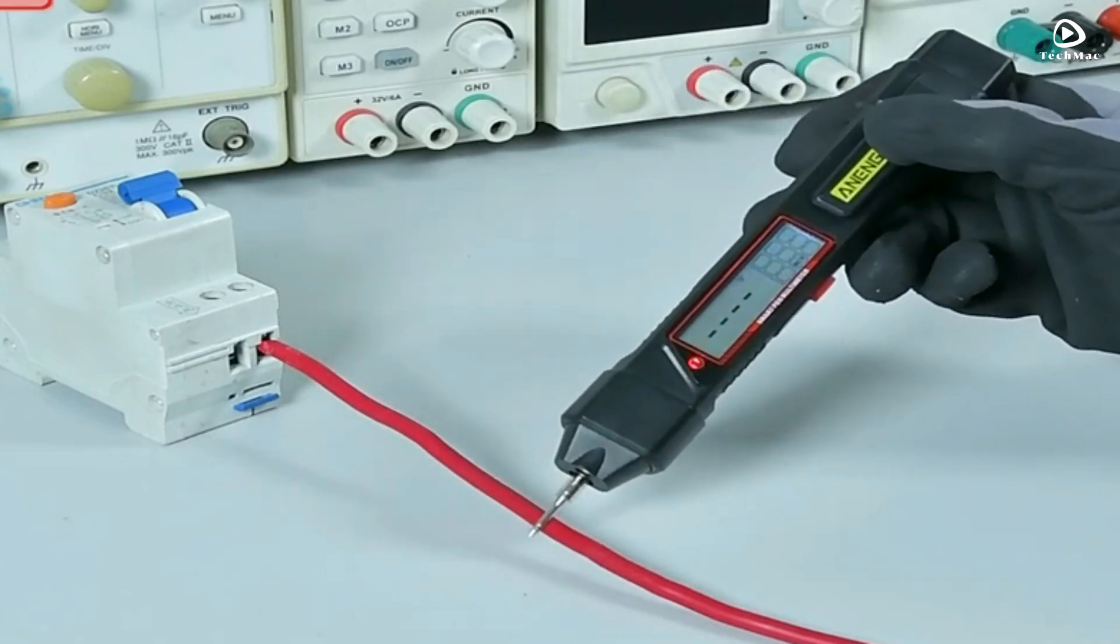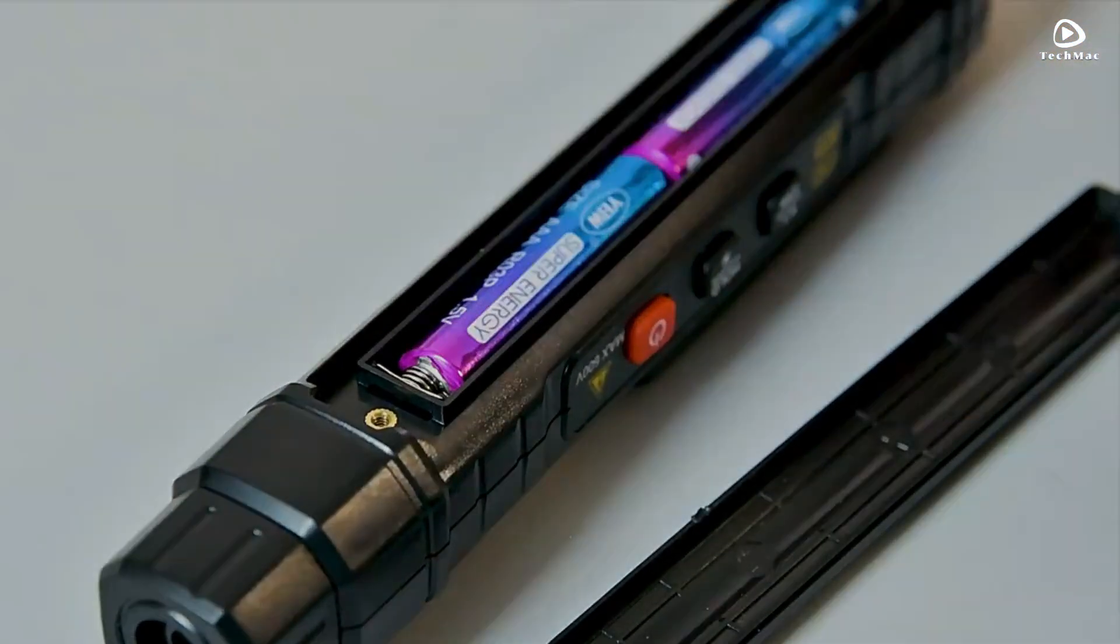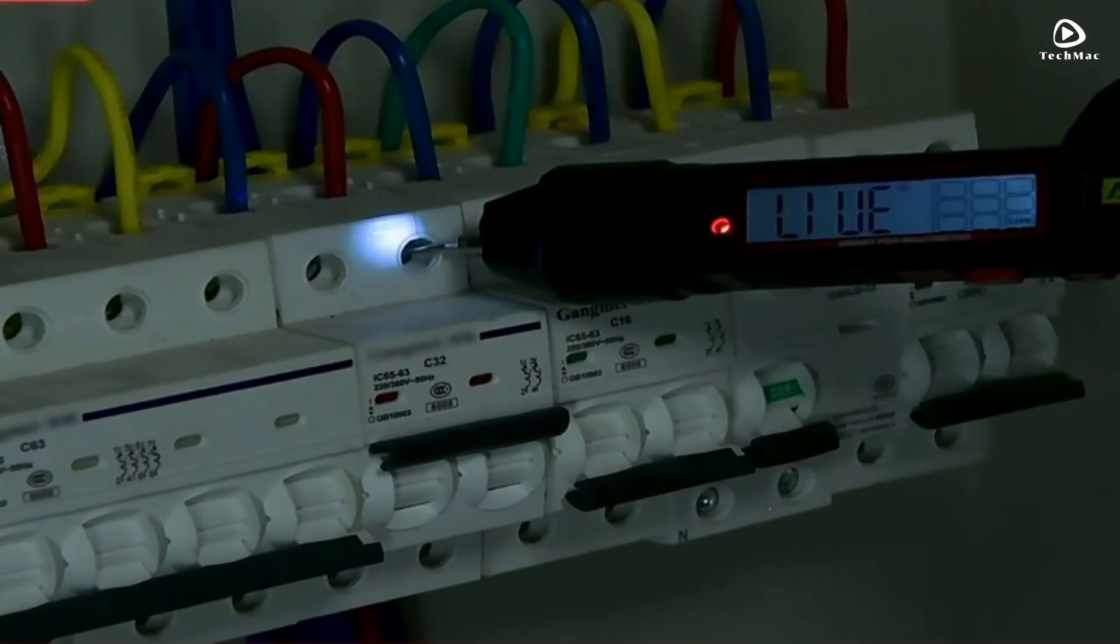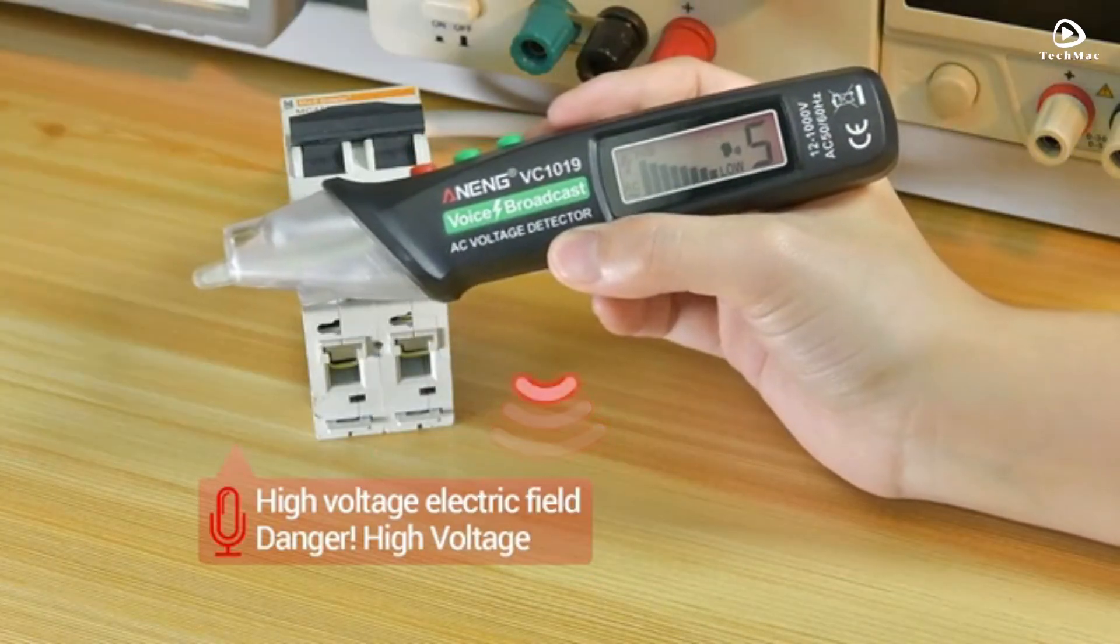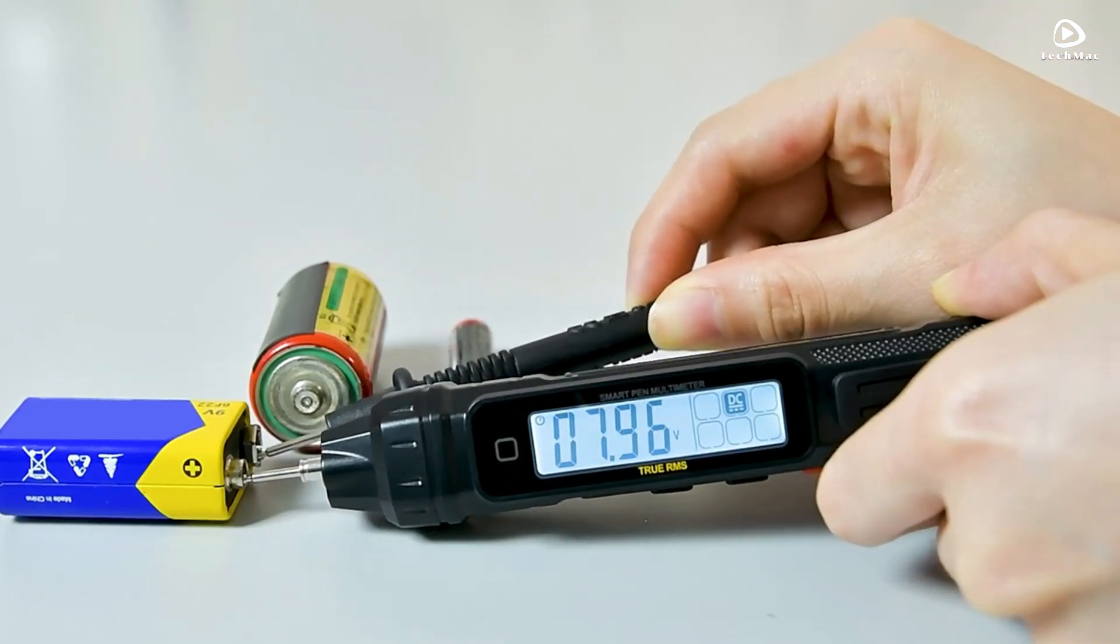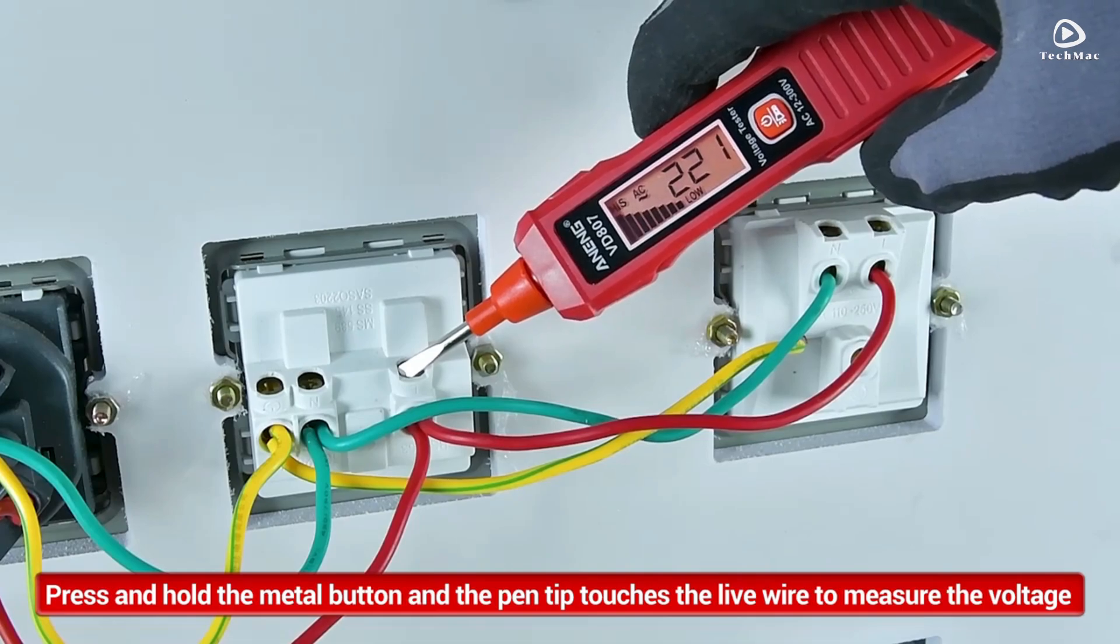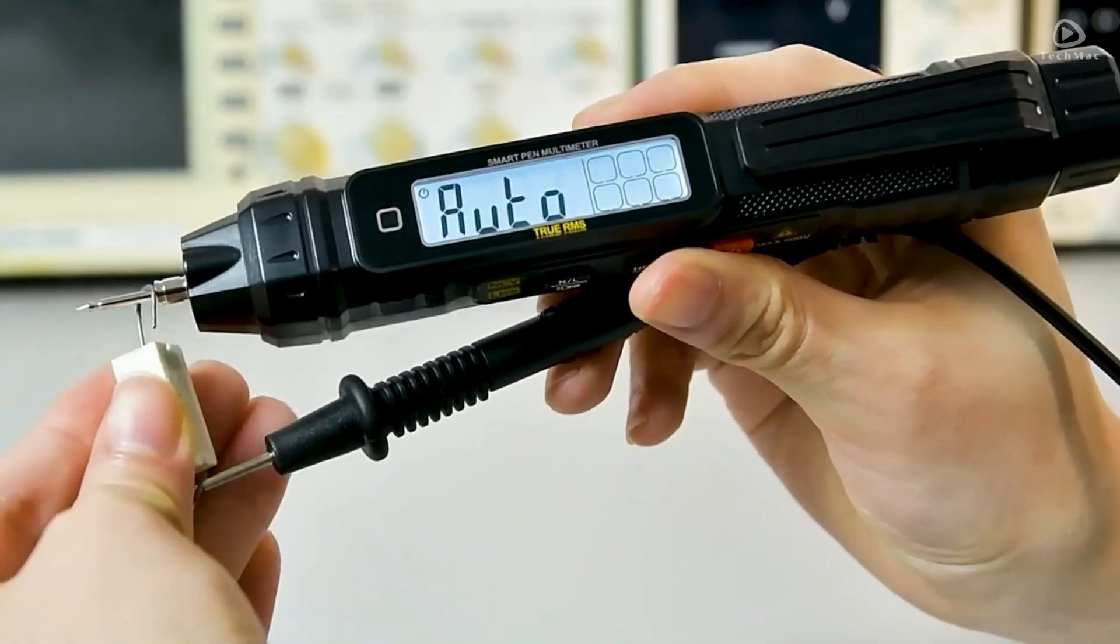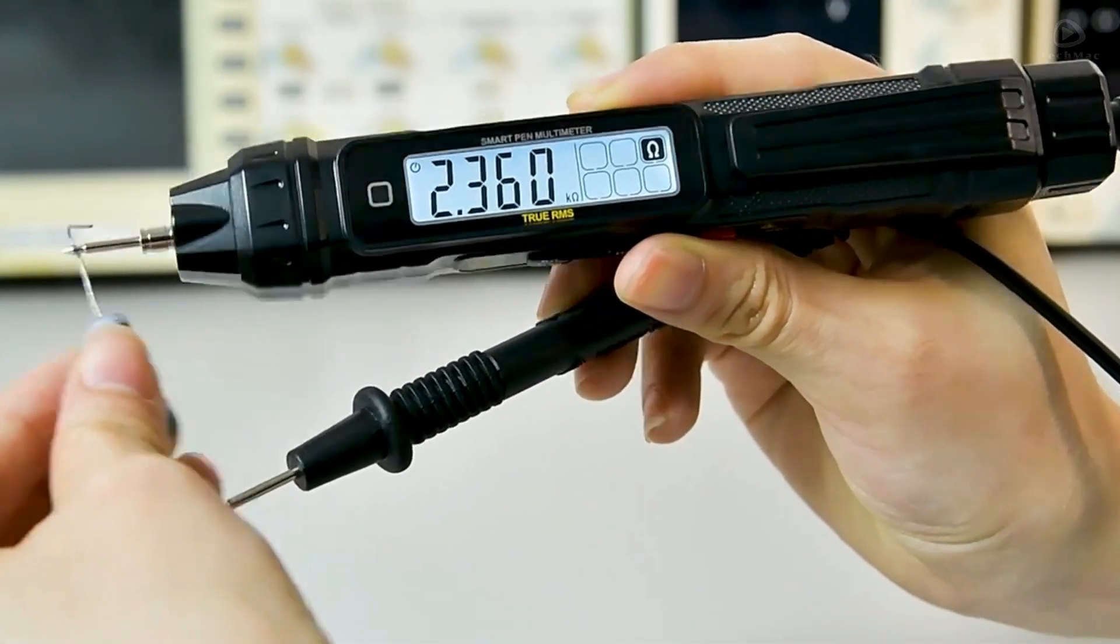And there you have it, the five best Anning Digital Multimeter Testers for 2025. Each of these models is perfect for different needs, so whether you're looking for precision, ease of use, or extra features, there's a tester here for you. Don't forget to like, comment, and subscribe if you found this video helpful. And as always, feel free to drop your questions below. I'd love to hear from you. Until next time, stay safe and keep testing.